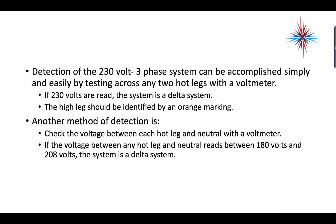Detection of the 230-volt three-phase system can be accomplished by testing across any two hot legs with a voltmeter. If 230 volts are read, the system is a delta system. The high leg, or longer leg, should always be identified by an orange marking. Another method of detection is to check the voltage between each hot leg and neutral — if any reading falls between 180 and 208 volts, the system is a delta system.